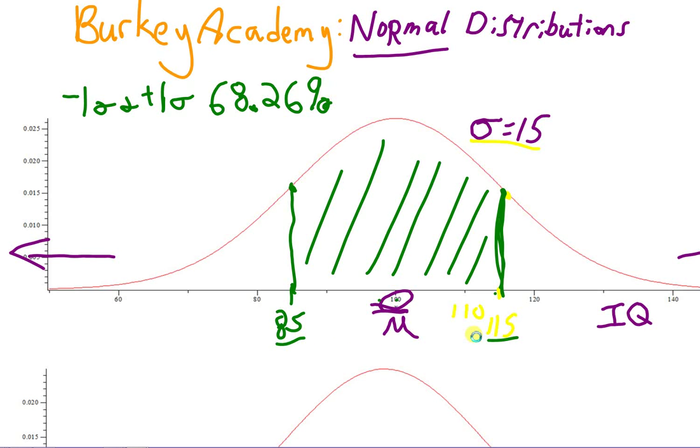This is kind of this average common range that isn't really shocking if you have an IQ between 85 and 115. There's nothing really weird about that. That's where you expect most people to be in that range.